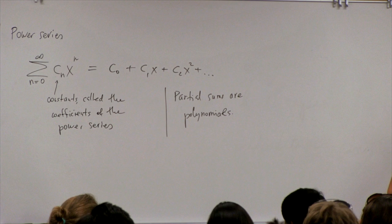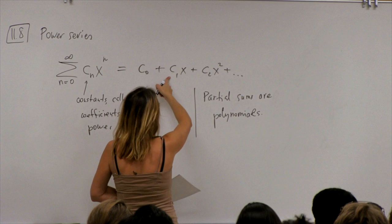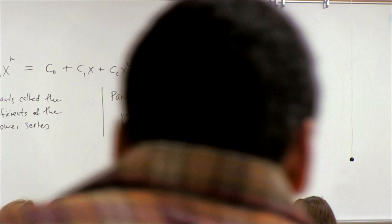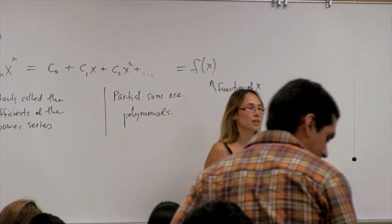Is the c the same in each term of the power series or is it different? Each coefficient c₀, c₁, c₂ can be a different number. So in fact we are given an infinite number of those coefficients. We can think of this as a function of x, and in general it's not really a polynomial because it has an infinite number of terms.